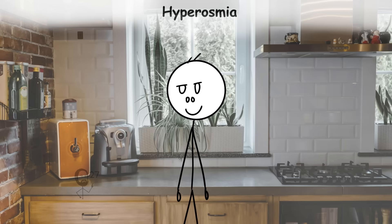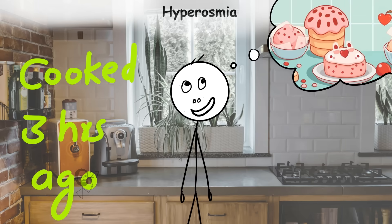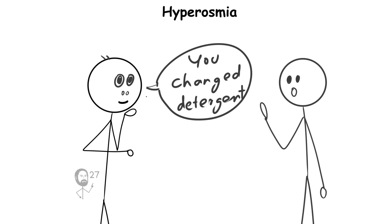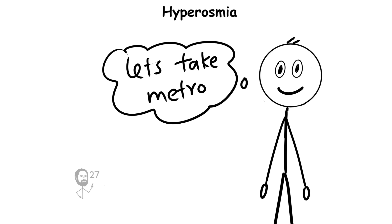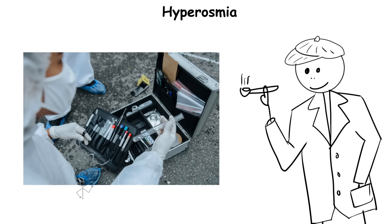For example, they might walk into a room and immediately recognize the lingering trace of a meal cooked hours earlier, or identify when someone has changed detergent. While this ability can be overwhelming in strong-smelling places like public transport or crowded areas, it also grants an almost forensic level of sensory awareness.